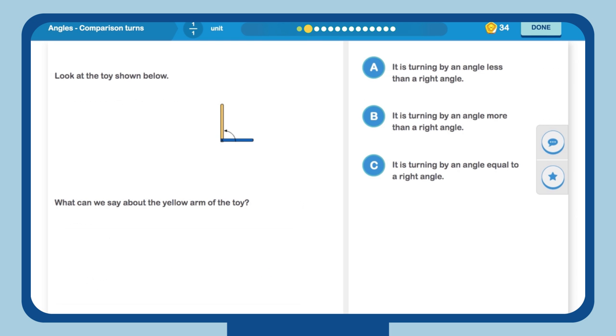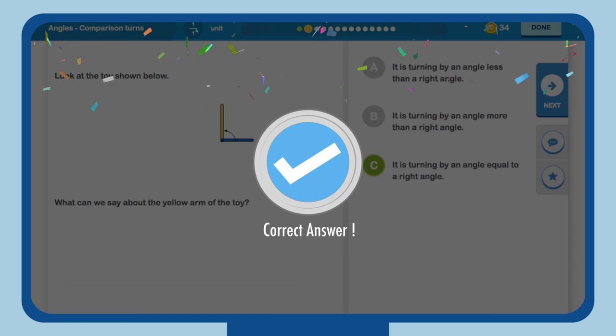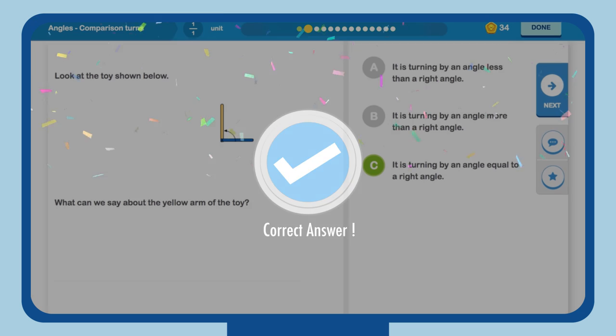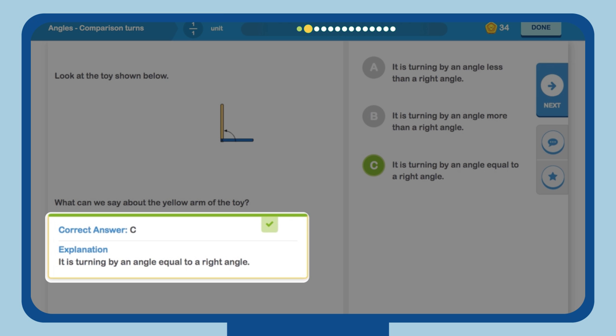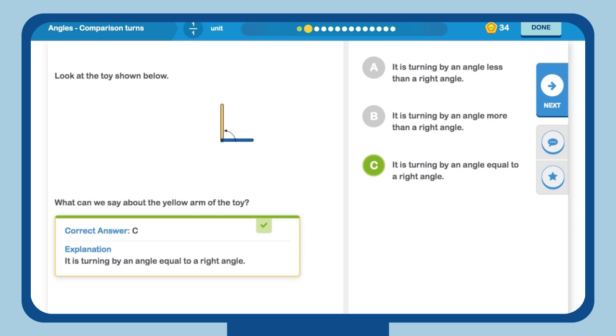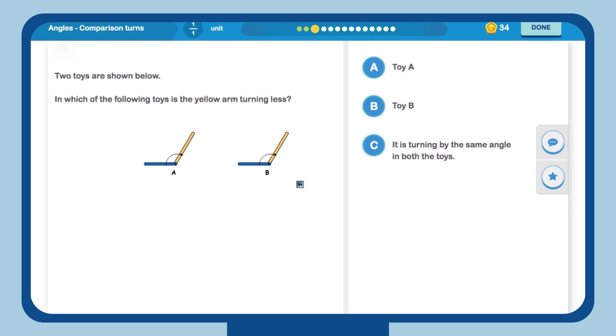Moving on, MindSpark gives her a question to identify the arm of the toy. Aarti thinks for a while and then chooses. Yay! Another correct answer. To make sure there is no ambiguity, MindSpark makes sure she knows why it's a correct answer. The series of questions continue and Aarti manages to answer them correctly.